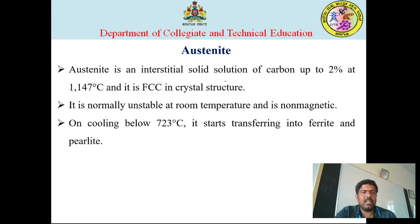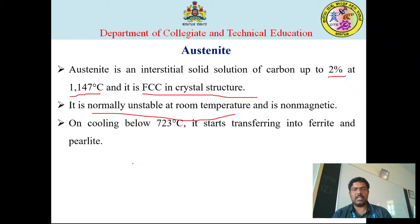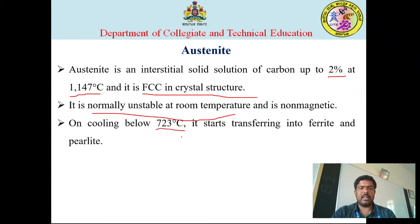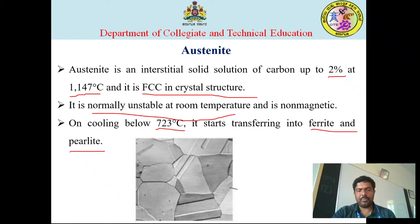Austenite is also a solid solution with carbon percentage up to 2% at 1147 degrees centigrade. It has an FCC (face-centered cubic) crystal structure. It is normally unstable at room temperature, but its properties vary as the carbon percentage ranges from 0.83% to 2%. When cooled below 723 degrees centigrade, austenite is transferred to ferrite and pearlite.